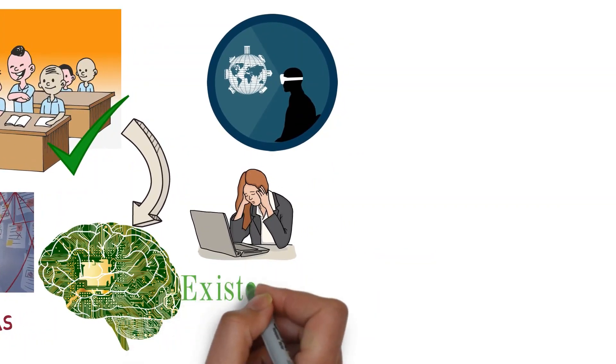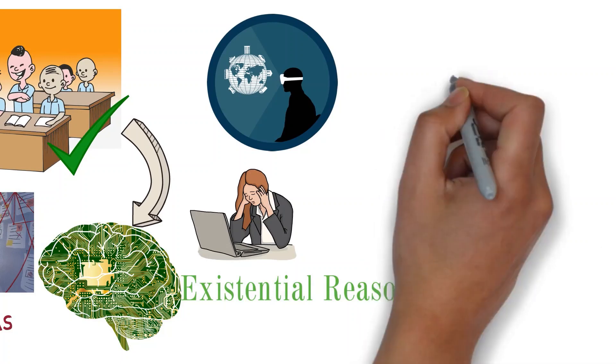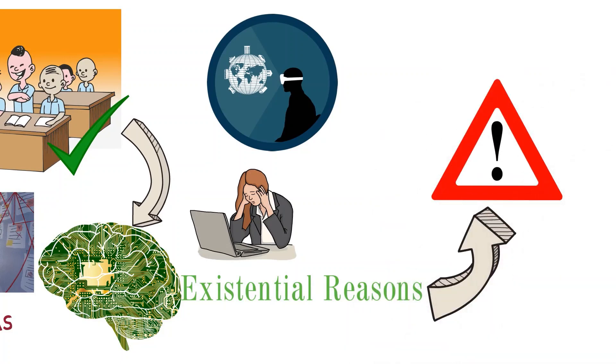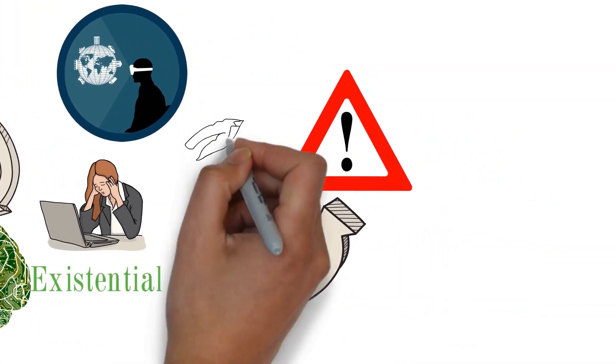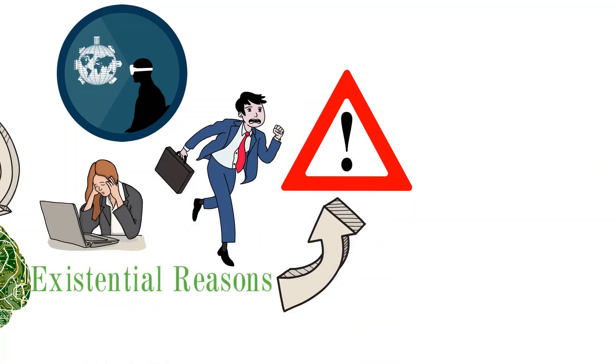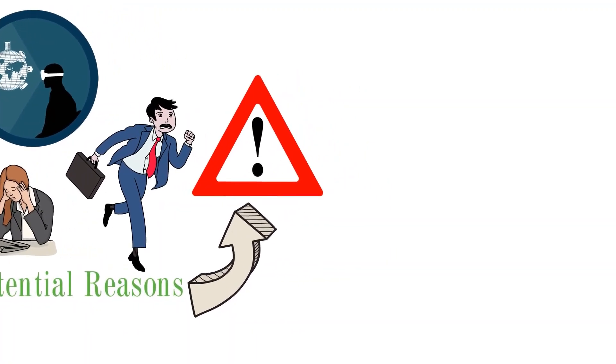Now onto existential reasons. There is also evidence that people turn to conspiracy theories as a way of feeling safer and more in control. When people feel threatened in some way, detecting sources of danger can be a way of coping with anxiety.